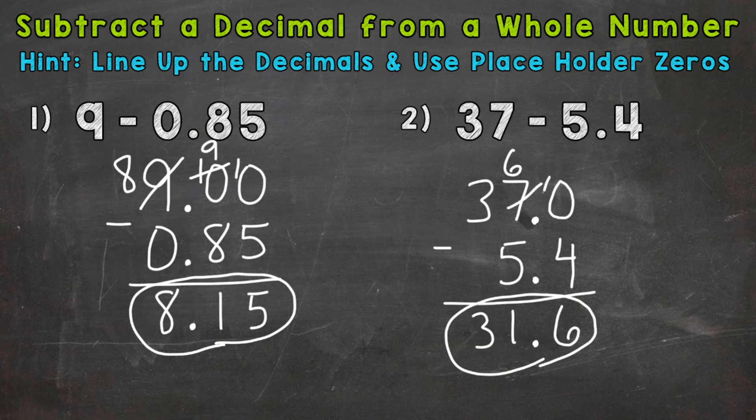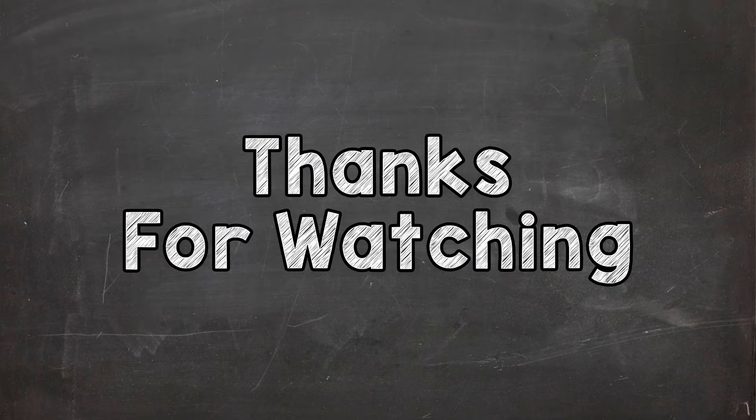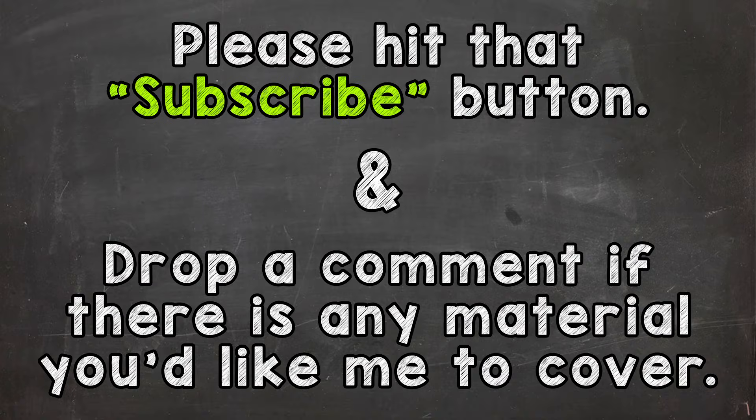So there you have it. There's how you subtract a decimal from a whole number. Line up your decimals, use placeholder zeros, and subtract. I hope that helped. Thanks so much for watching. Until next time, peace.